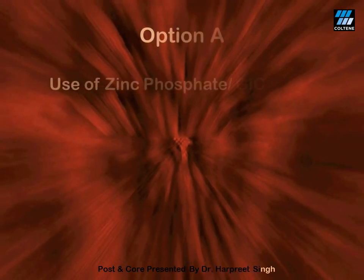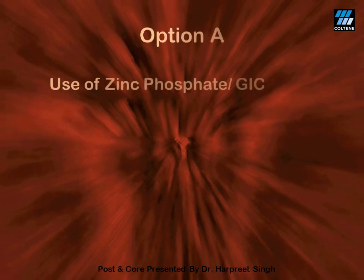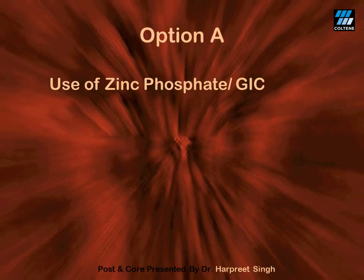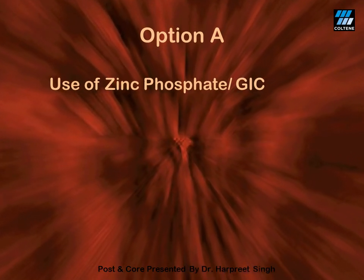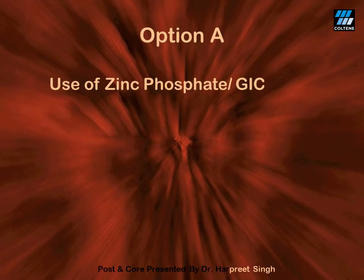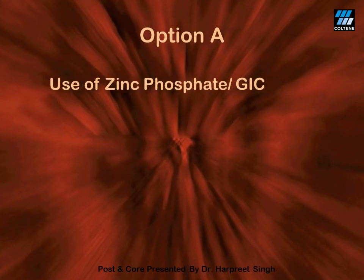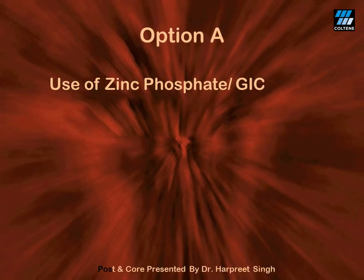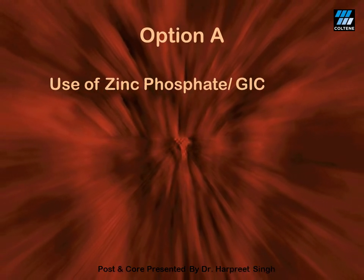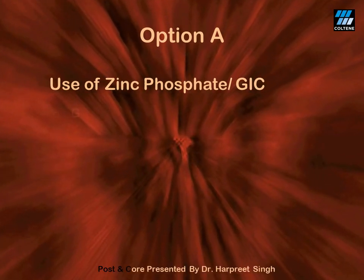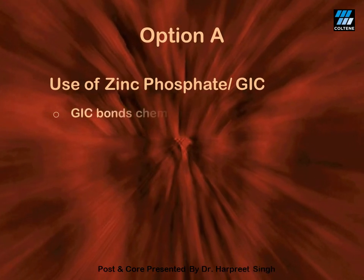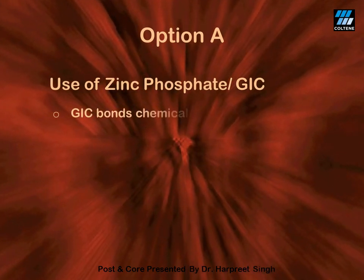So far, we have shortlisted a few things: selection of the fibre post, the ideal length of the post, the ideal diameter of the post, and the use of cemented posts. But with which cement should one lute the post? Let's look at the options.